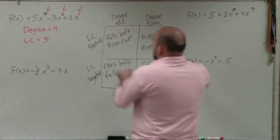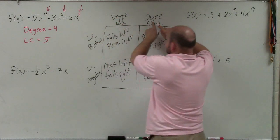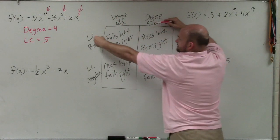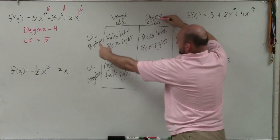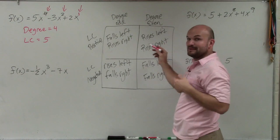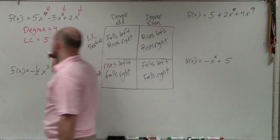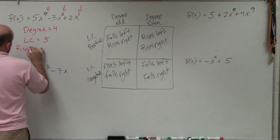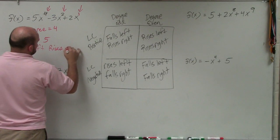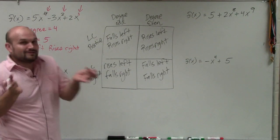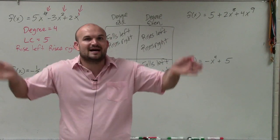Now I go to the leading coefficient test and ask: is my degree odd or even? 4 is even. And is my leading coefficient positive or negative? It's positive. Bringing those together, I can determine that my end behavior is going to rise left and rise right. We don't know what the graph does in between — we just know the end behavior is rise left, rise right.